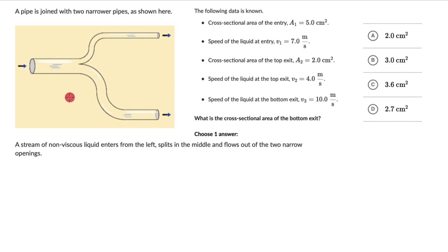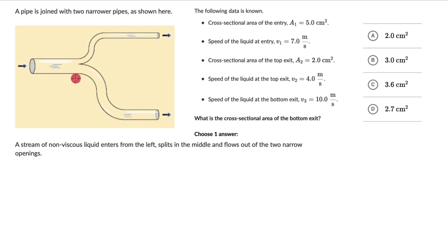Let's solve a question on the continuity equation. A pipe is joined with two narrower pipes as shown. A stream of non-viscous liquid enters from the left, splits in the middle, and flows out of the two narrow openings.